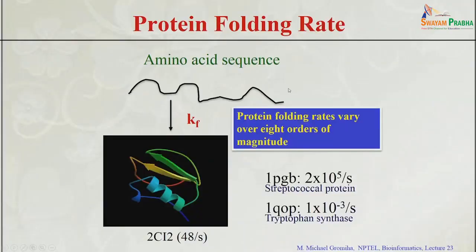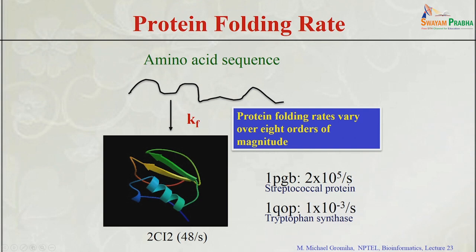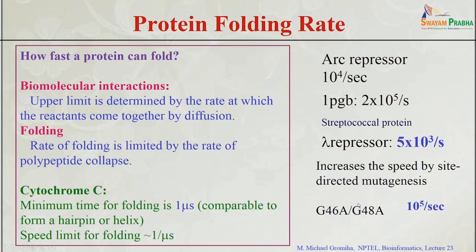You can show an example: an amino acid sequence takes time to fold into a specific 3D structure. The folding rate varies over 8 orders of magnitude — from microseconds to an hour. One example is a streptococcal protein where the rate is 2×10⁵ per second — very fast folding. For tryptophan synthase, it is very slow folding at 1×10⁻³ per second. So the question is: how fast can your protein fold?